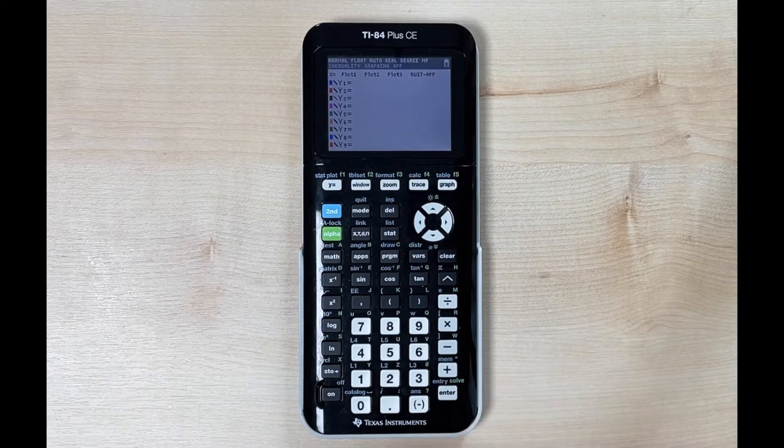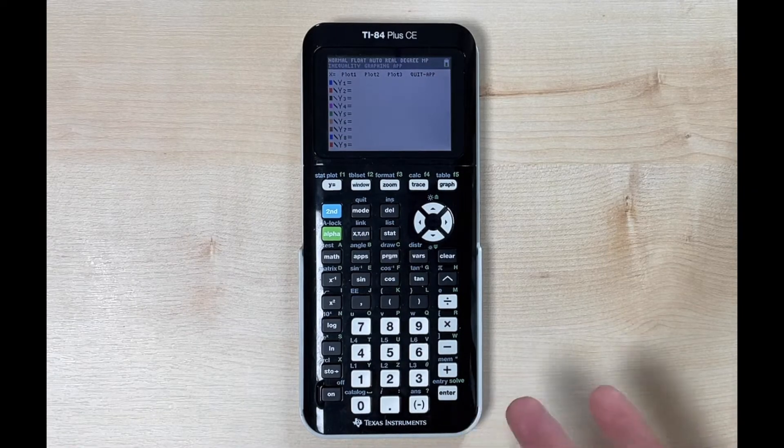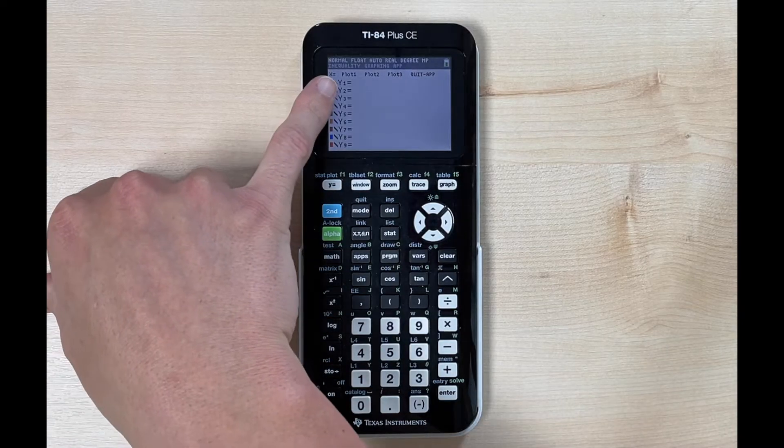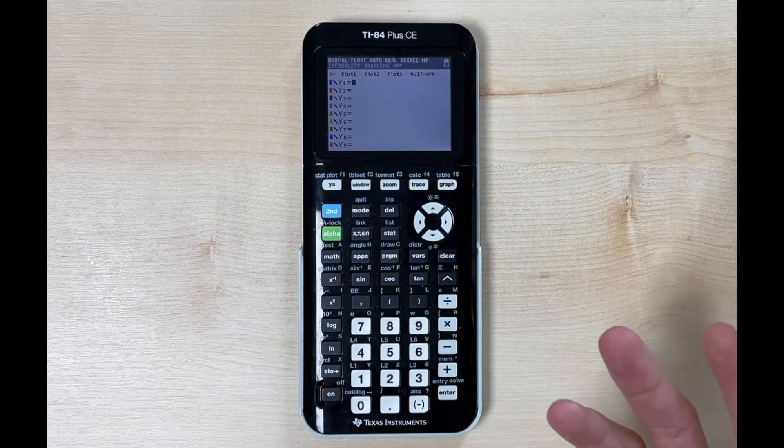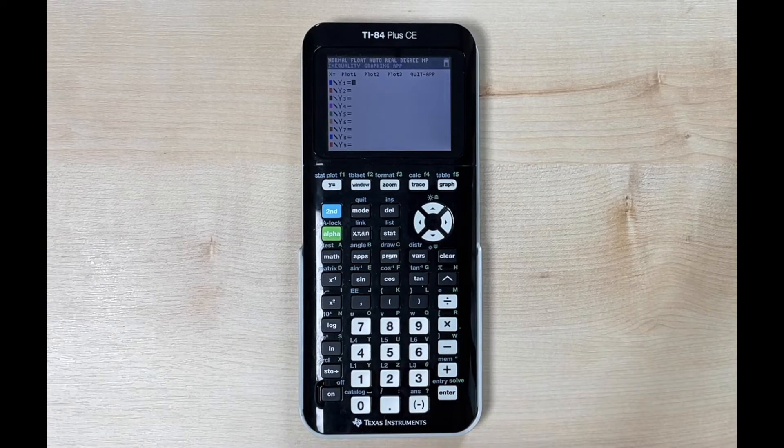With a linear equation we want to use something in slope intercept form because we are starting with y equals. So we want y equals mx plus b and let's say for example we want to graph the equation 2x plus 5.